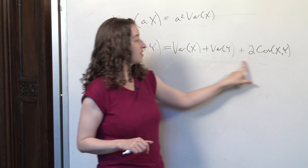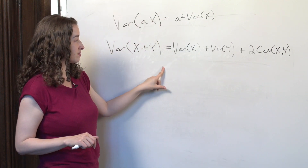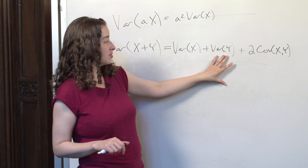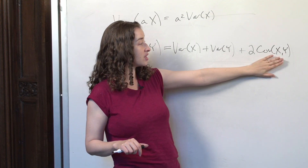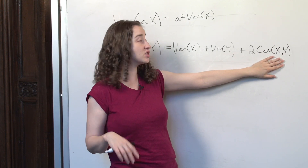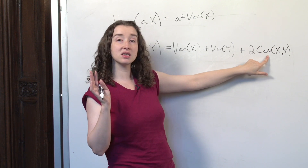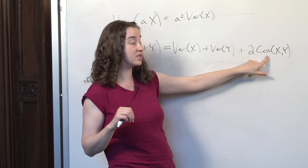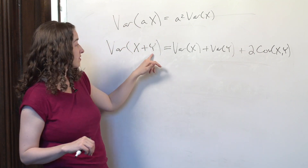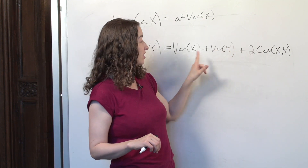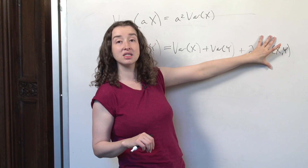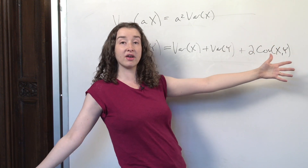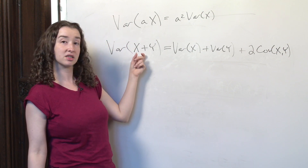That's reflected in this quantity: the variance of x plus y is equal to the variance of x plus the variance of y plus 2 times the covariance. Just like correlation, covariance is a big positive number when there's a positive correlation. So if those incomes and bonuses are positively correlated, the variance of income plus bonus is going to be variance of x plus variance of y plus a big positive number — just as our intuition told us, there's going to be a lot of variability in the sum x plus y.